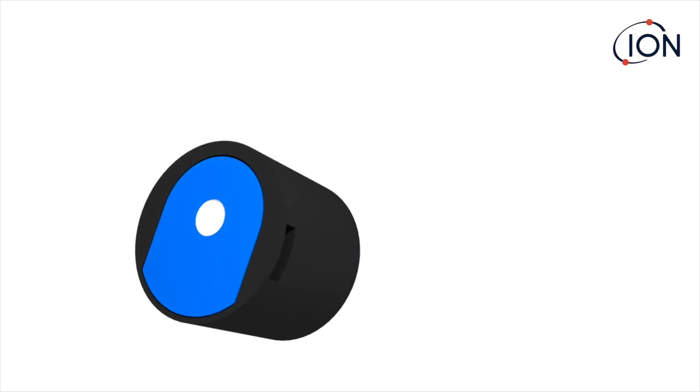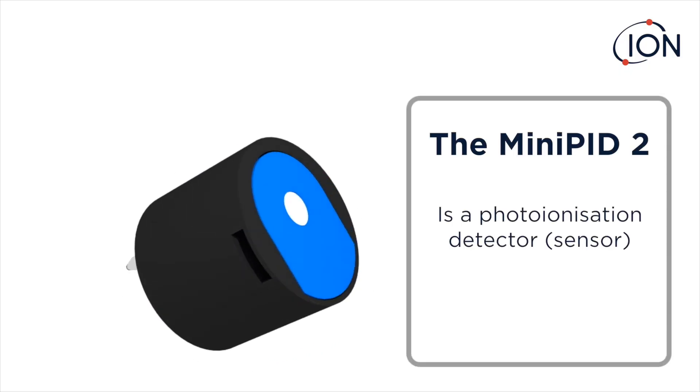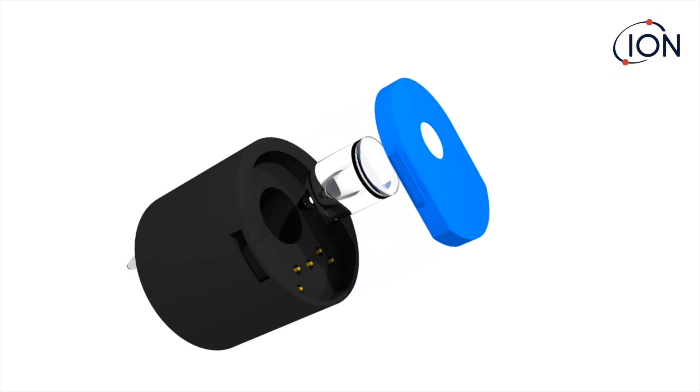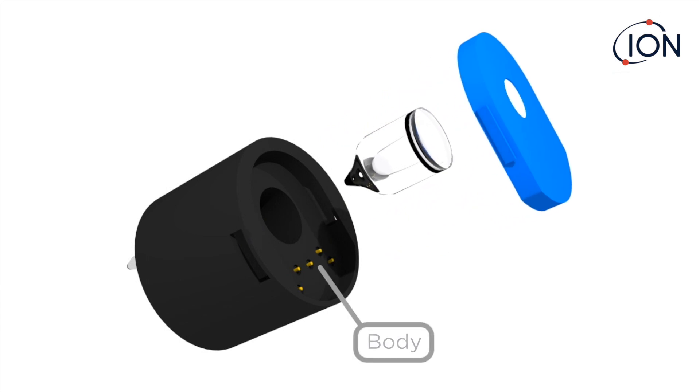The IonScience Mini PID is a photoionisation detector that detects a wide range of VOC gases. It consists of three main components: the body, the UV lamp, and the electrode stack.